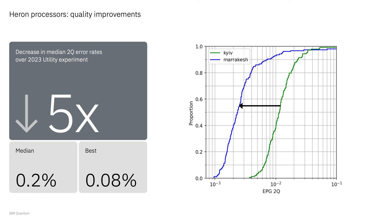We've now shown that experiments in the utility paper that took almost six days can now be executed in a little over two hours — that's a 50x speedup, meaning 50x more experiments per unit time. With our latest Heron processors, we've made a 5x improvement in median two-qubit error rates over the 2023 utility experiment. The implications of these improvements for error mitigation sampling overheads are huge.